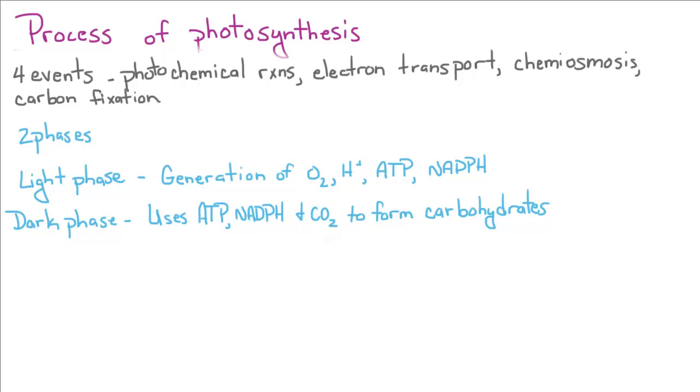The two phases: you've got the light phase where oxygen is generated, also hydrogen ions to form the chemiosmosis, ATP and NADPH.